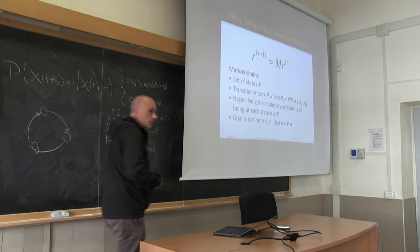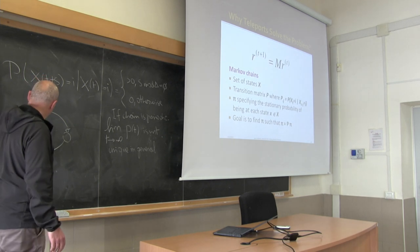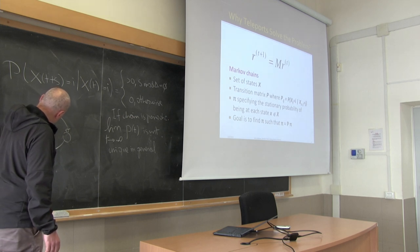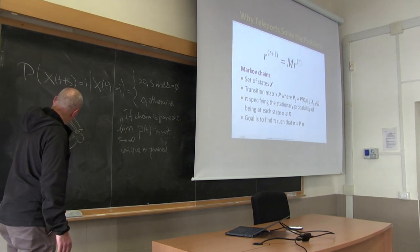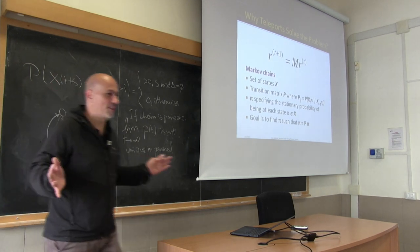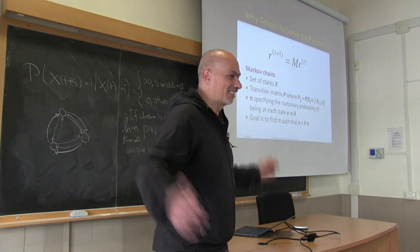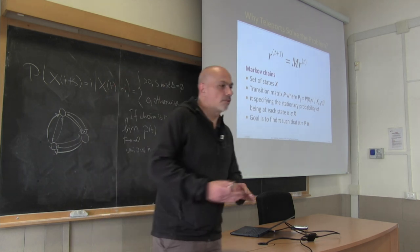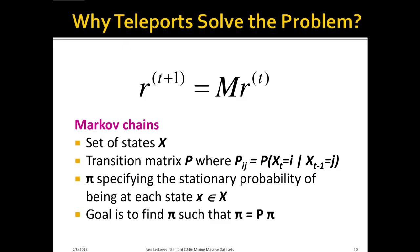Let us look at an example. If we modify the network to make a complete graph, it is clear that the chain is no longer periodic. However, if you have a complete network, the stationary distribution is always a uniform distribution. So PageRank will assign the same score to every node, making it useless. But we can do something more sophisticated.